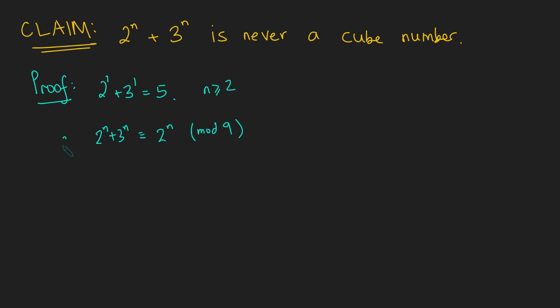And we want this to be a cube number, so I'll call this x cubed. And I'm going to be showing that this gives us a contradiction. So you get x cubed is 2 to the n mod 9.